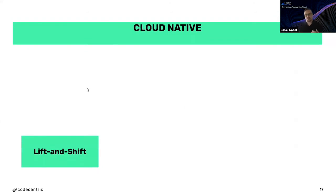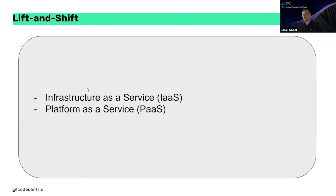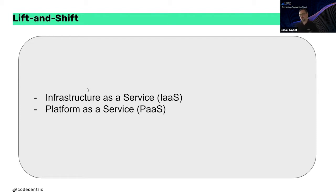Even when thinking about cloud native, we have Kubernetes as an environment we need to get into. The easiest — and sometimes hardest — part is lift and shift. This means using infrastructure as a service or platform as a service to do this lift and shift, hopefully in an easy way.